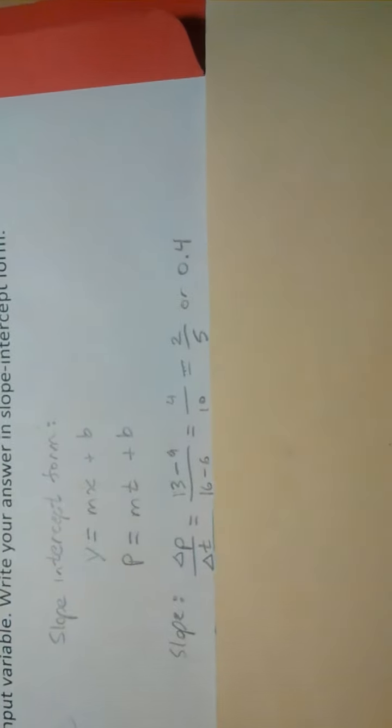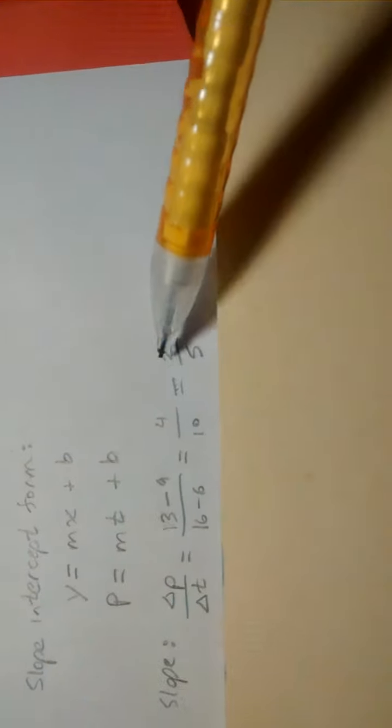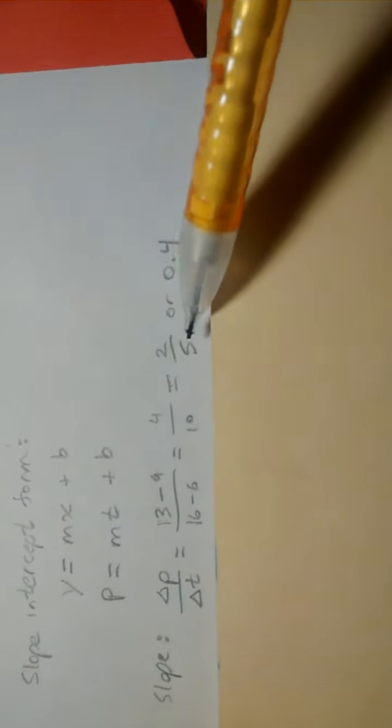Again, the slope is defined to be the change in the output divided by the change in the input. So you get these calculations, 2 over 5, or 0.4 if you put that in your calculator.